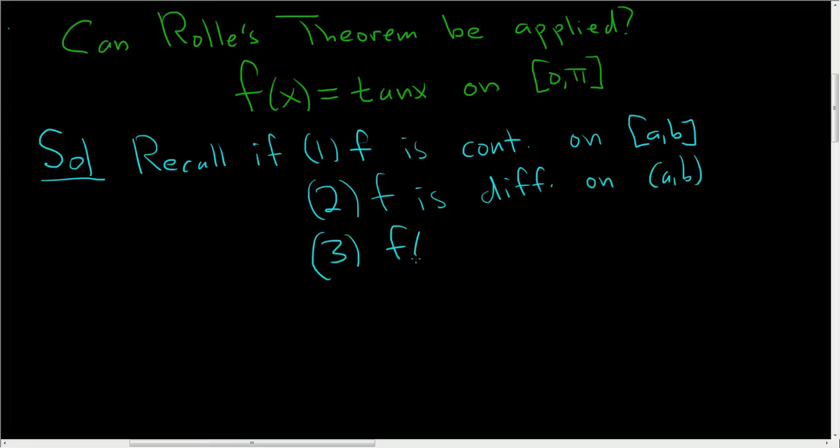the values of f at the endpoints need to be the same. So the function values at the endpoints need to be the same. So if all three of these conditions hold, then Rolle's theorem says there exists a number, which we'll call little c, inside the open interval (a,b).